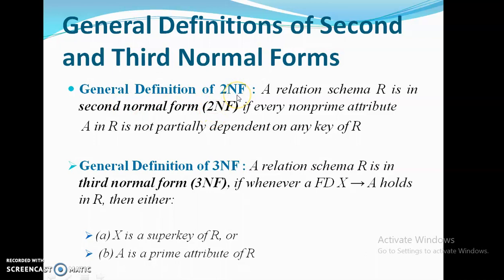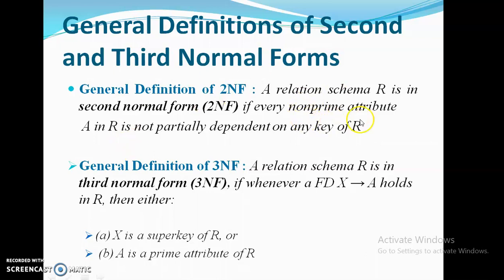As you all know, first normal form depends on atomicity — only atomic values are allowed in the schema. The general definition of 2NF states that it depends only on full functional dependency. That is, a schema R is in second normal form if every non-prime attribute A in R is not partially dependent on any key of R. Every non-prime attribute should be fully dependent on the keys of R.